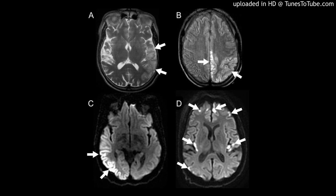Results: Gyri-form DWI hyperintensity with decreased apparent diffusion coefficient (ADC) and patchy DWI hyperintensity with normal ADC were noted in 56 of 58 and 2 of 58 cortical regions of acute lesions, respectively. High ADC and a mix of low and high ADC were observed in 51 of 58 and 5 of 58 affected subcortical white matters, respectively. Lacunar infarcts existed in 23 of 40 patients.